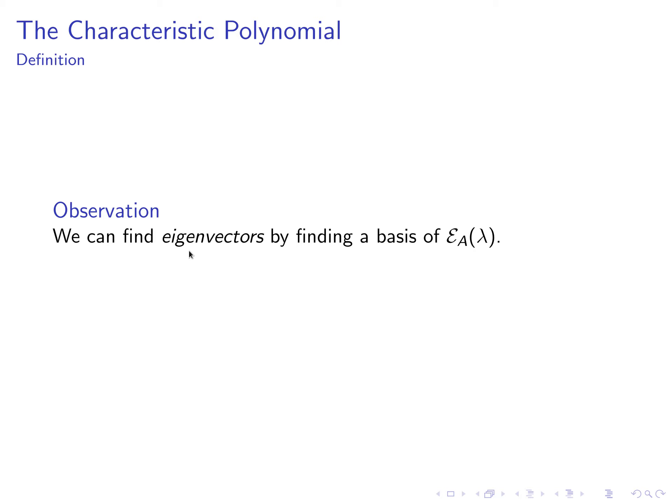For any eigenvalue, the eigenvectors are exactly the vectors that live in the eigenspace, which is defined as the null space of the difference between lambda times the identity minus the matrix. So since we know how to find bases for null spaces, we know how to find eigenvectors once we are given the eigenvalues.